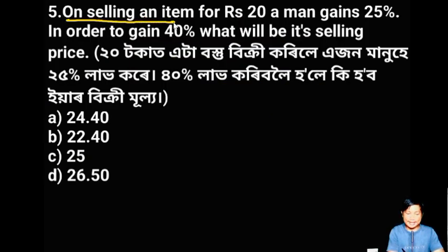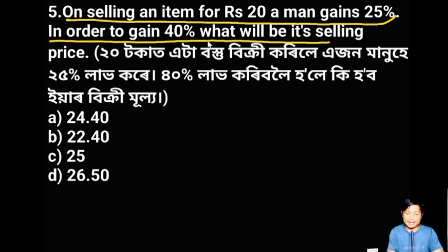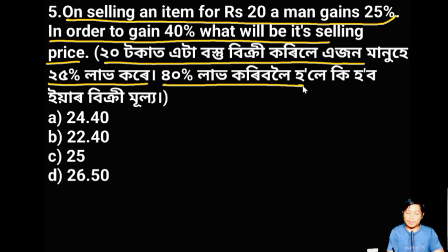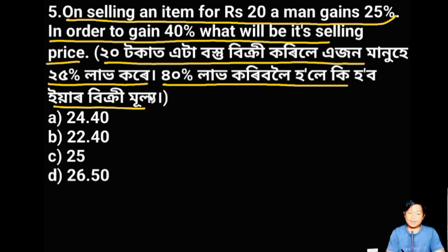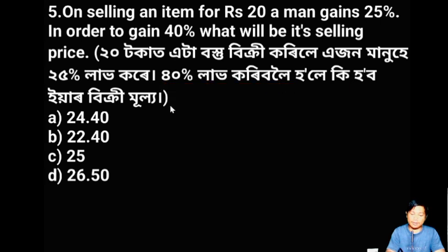On selling an item for RS 20 one gains 25%. In order to gain 40%, what will be its selling price? That is a little more expensive — 14% at worst, 16%.